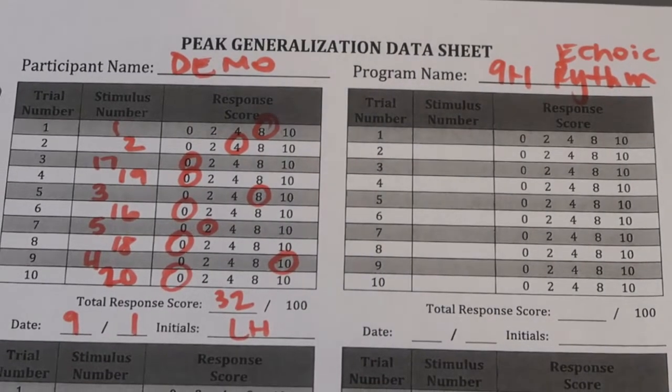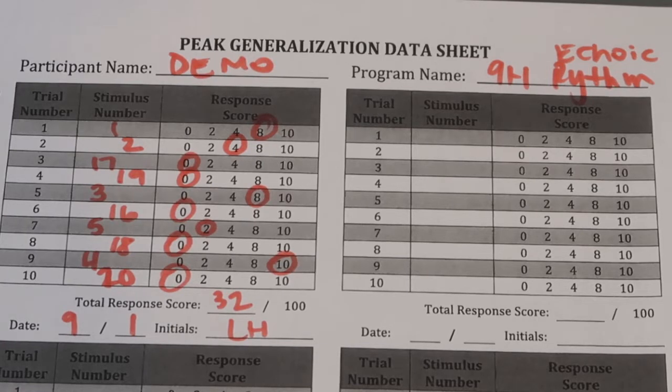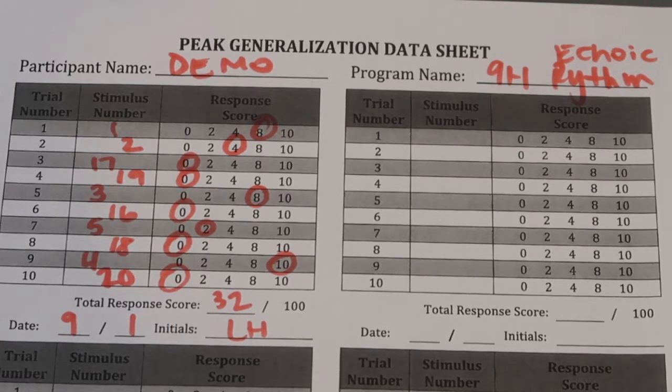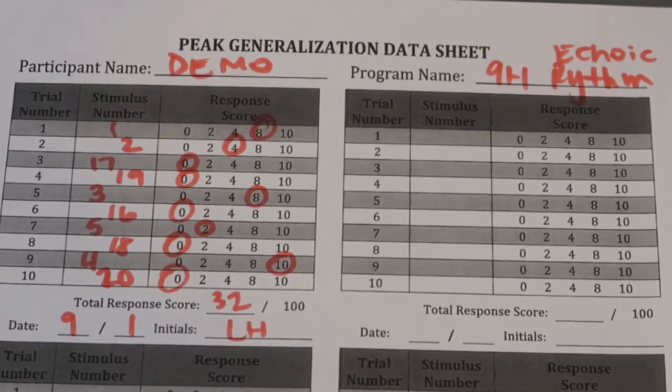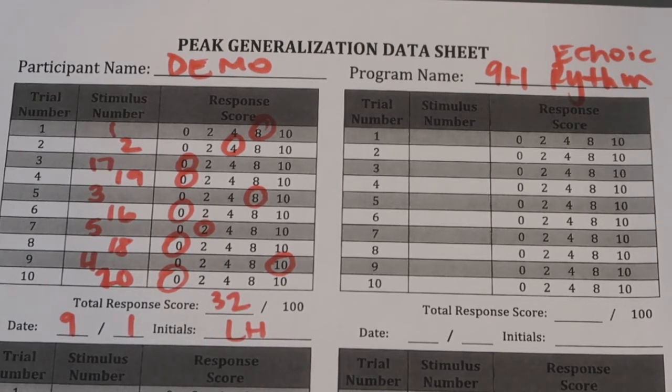All right, time to check your scores for PEAK generalization 9-H echoic rhythm. One, two, three, and then let's try this one. Thank you.